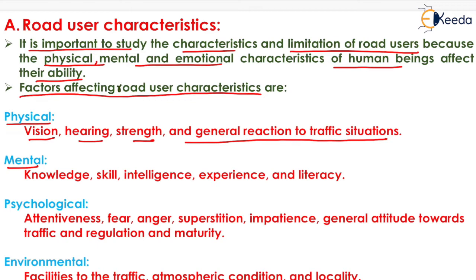The next factor is the mental factor: knowledge of the vehicle and road, skill of the driver, intelligence of the driver, experience of the driver, and literacy of the driver. If he has the knowledge, he can overtake slow-moving vehicles. If he has the skill, he can park with utmost care. If he has experience, he will drive as smoothly as possible. If he is literate, he will read all instructions written on that section of the road.